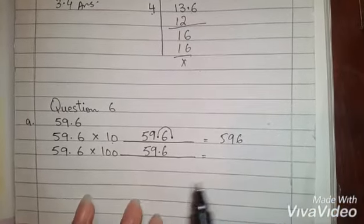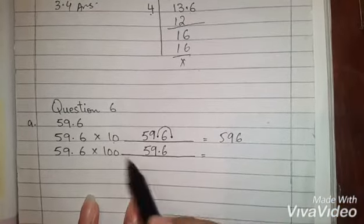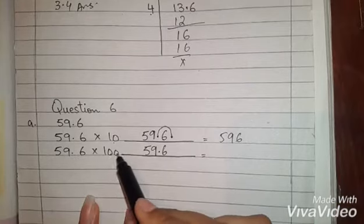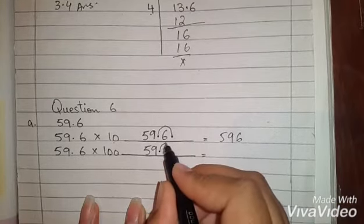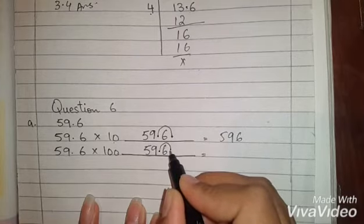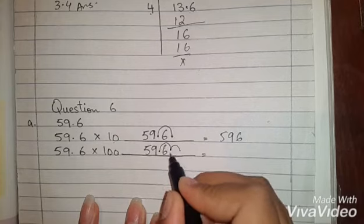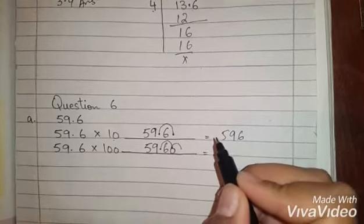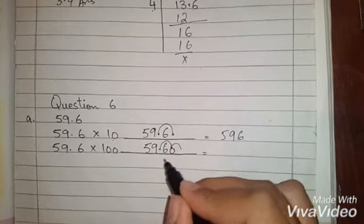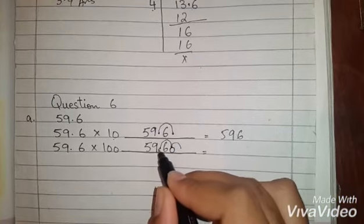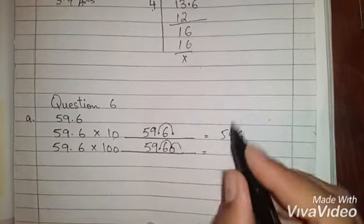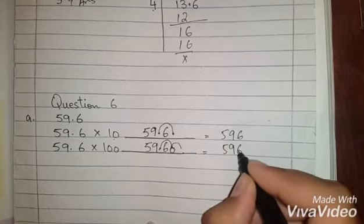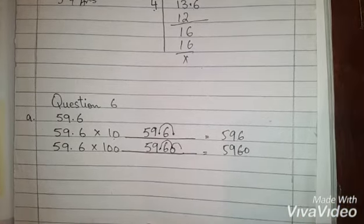Now see, we will multiply this with 100. If we multiply this with 100, the point moves. 5960. We will multiply this with 100.